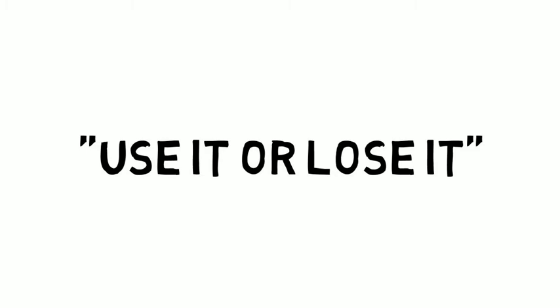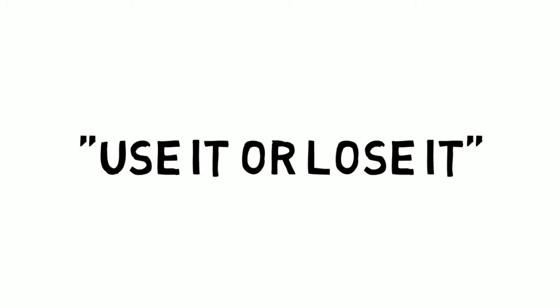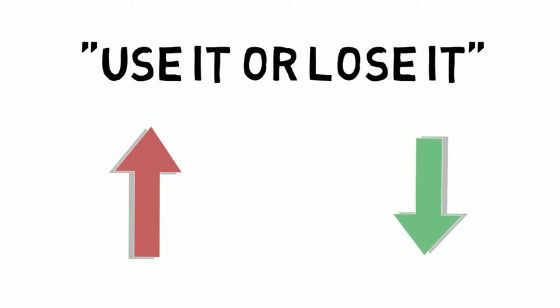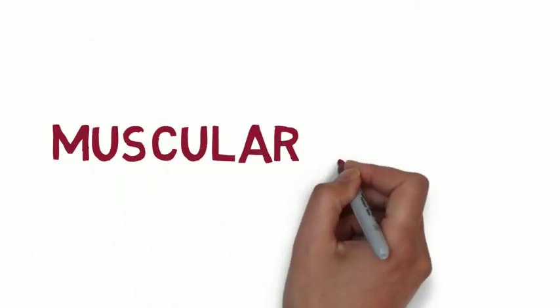What this means is that any skeletal muscle in your body that is overused will increase in size, whereas other parts of the body that are underused will decrease in size. This is exactly what happens in the case of muscular atrophy.